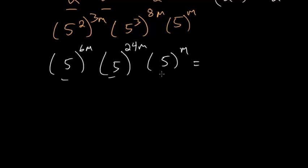And now they all have the same base, so we can add all of these exponents. So 6 plus 24 is 30, plus 1 is 31. So this is 5 to the 31m.